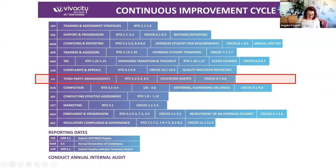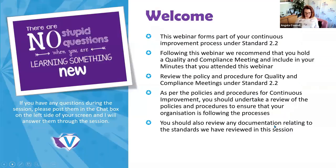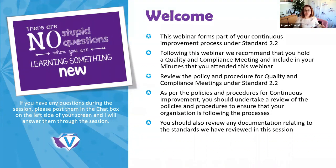As per usual, this webinar forms part of the continuous improvement process under standard 2.2. Following this webinar, we recommend that you hold a Q&C meeting and include in your minutes what you've found and discovered in this webinar and what you may need to implement into your organisation. Review the policy and procedure for quality and compliance meetings as per the standards and the policies and procedures within the manual.